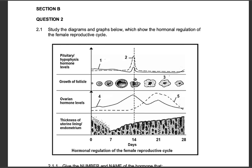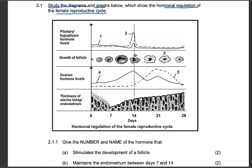Let's look at the first question. This is a very popular diagram or graph when it comes to the menstrual cycle — assessing hormone levels over the 28 days of the menstrual cycle. The question says: study the diagrams and graphs below which show the hormonal regulation of the female reproductive cycle. Before you check the questions, analyze the diagram first. At the bottom we have the number of days from day zero to day 28.